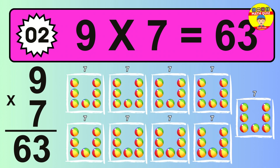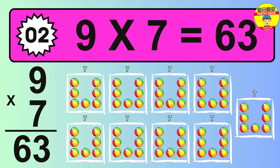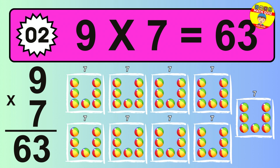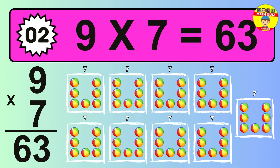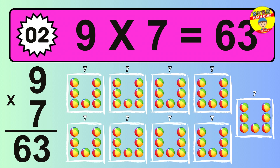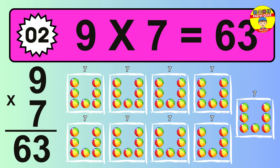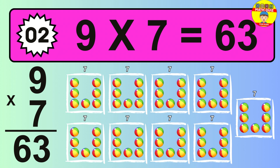The answer is 9 times 7 is 63. To calculate, we have 9 groups with 7 balls each one. So, how many balls do we have? 63 balls.